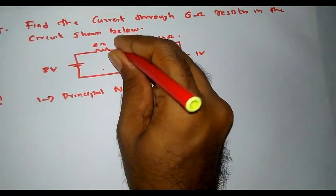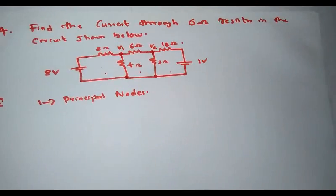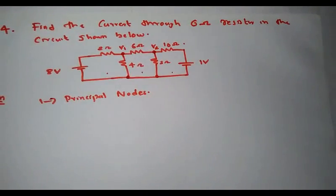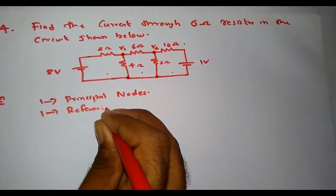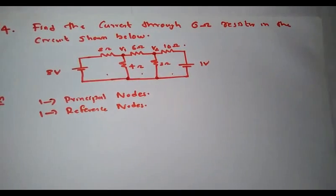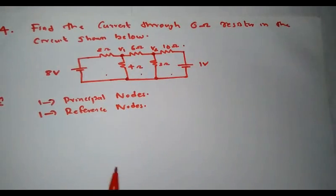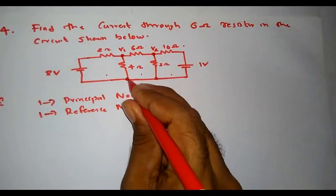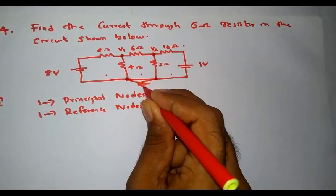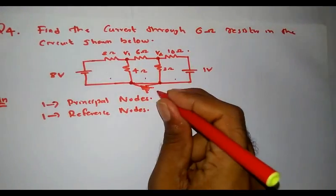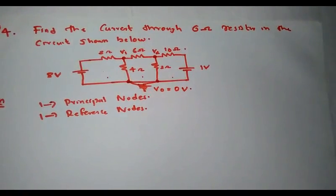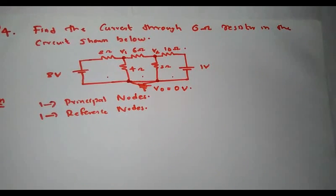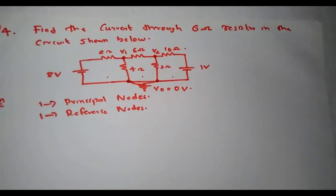I am assigning the node voltages: the first principal node is V1 and the second principal node is V2. Next, I have to assign the reference node. The reference node or common node is a point to which different elements are joined at a common potential. Here, this is considered to be the reference node, and we assign the voltage of the reference node as zero volts. So V1 and V2 are principal nodes and V0 is the reference node.